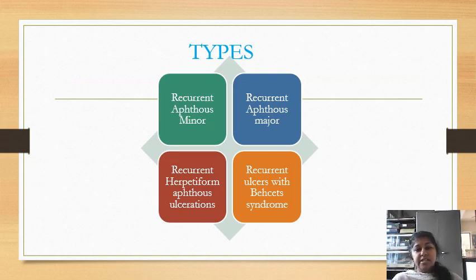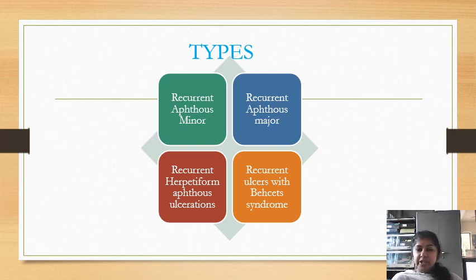We can classify Aphthous Ulcer into types: Recurrent Aphthous Minor, Recurrent Aphthous Major, Recurrent Herpetiform Ulcers, and Recurrent Aphthous Ulcer with Behçet Syndrome.